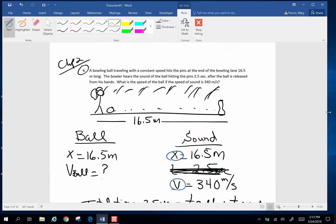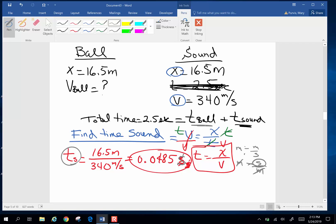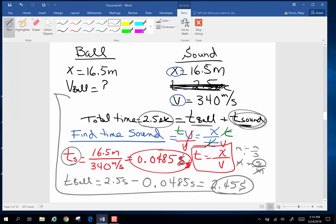So if I want to know the time for the ball, it is going to be the total time minus the time for the sound is going to give me the time for the ball. So the time for the ball is going to be the total time, 2.5 seconds, minus the time for the sound, 0.0485 seconds. So 2.5 minus 0.0485, and I end up with 2.45. I'm going to give it another decimal out there. Well, it's only 3 sig figs. That'll do seconds. That's going to be the time for the ball. Now I can plug that back up here.